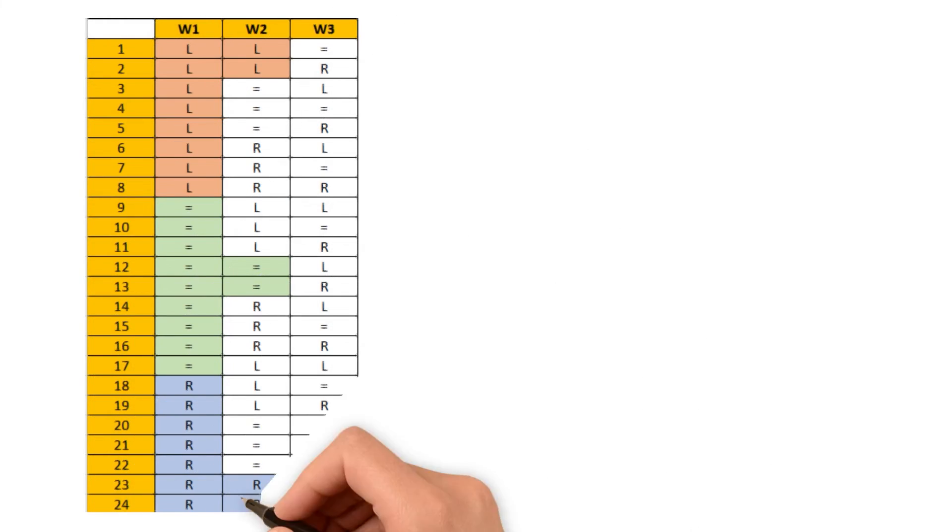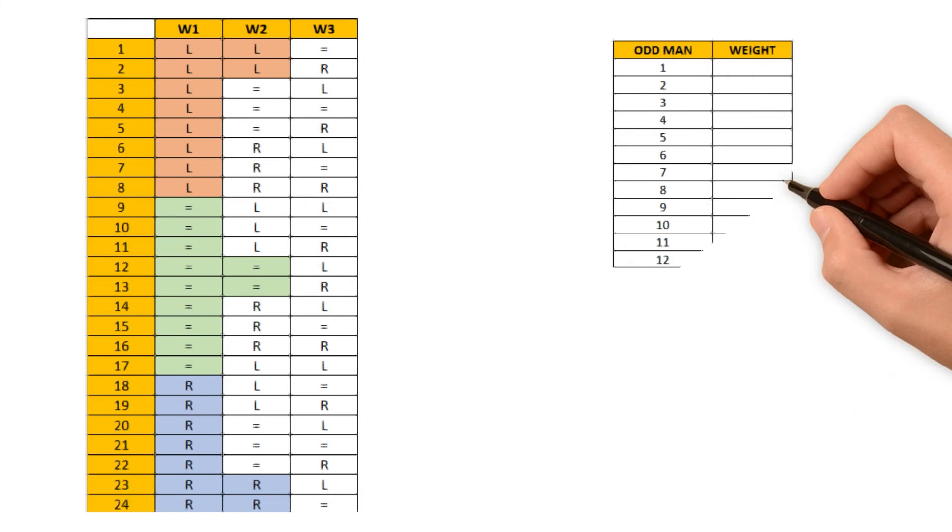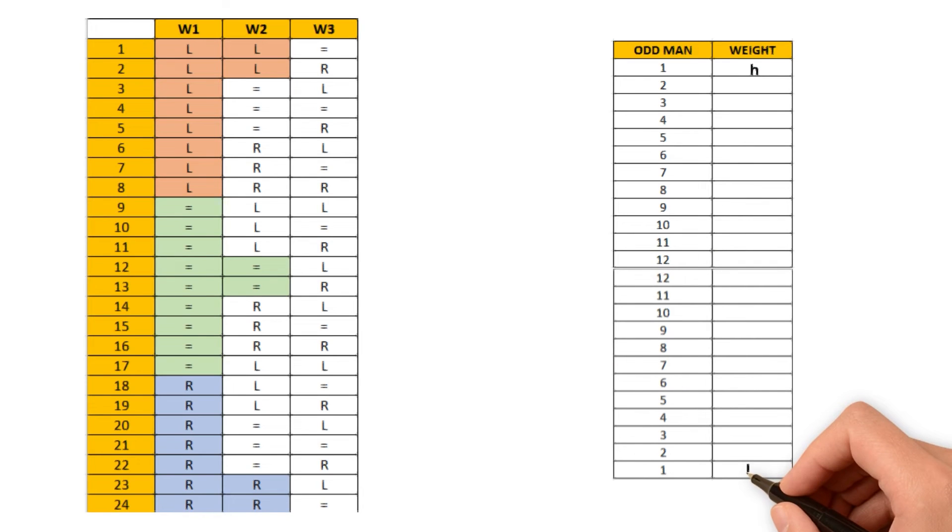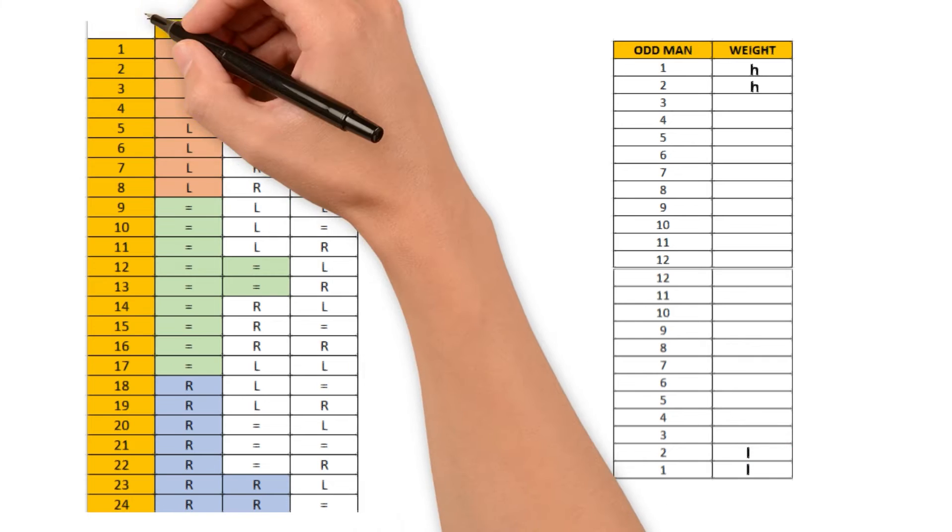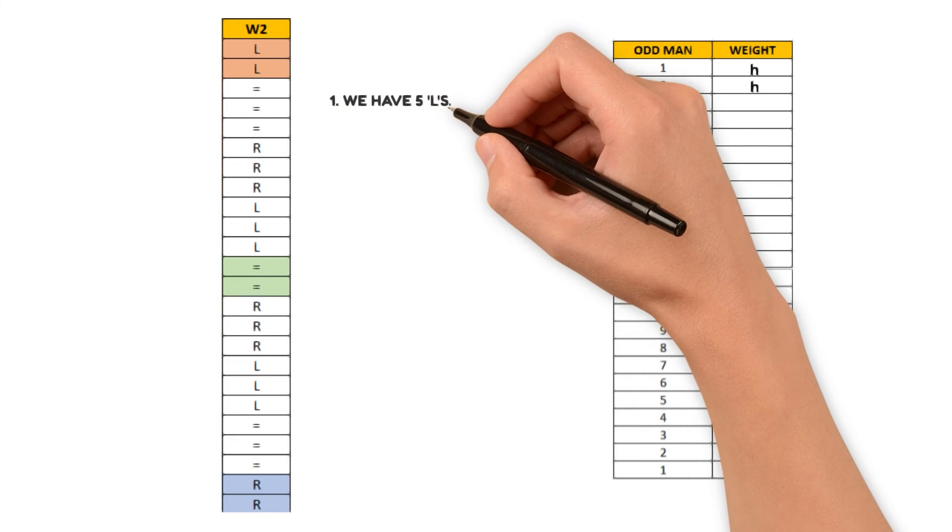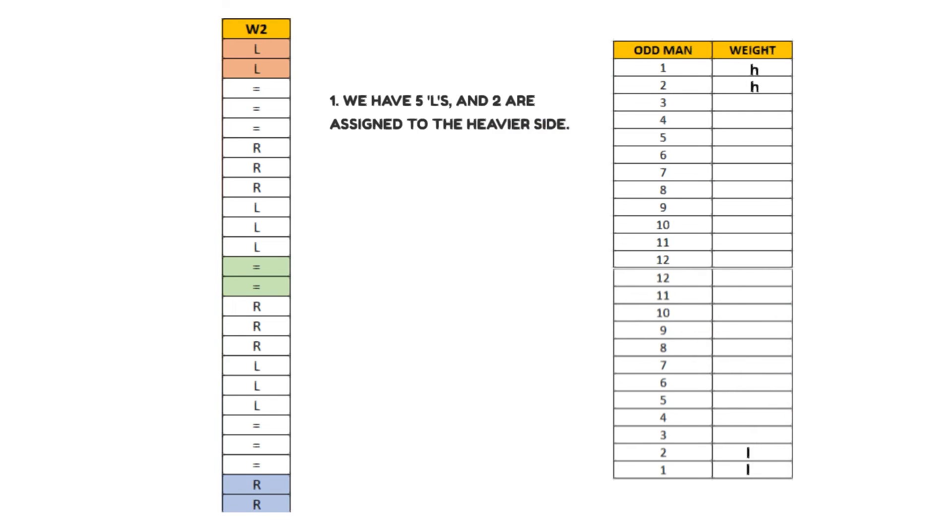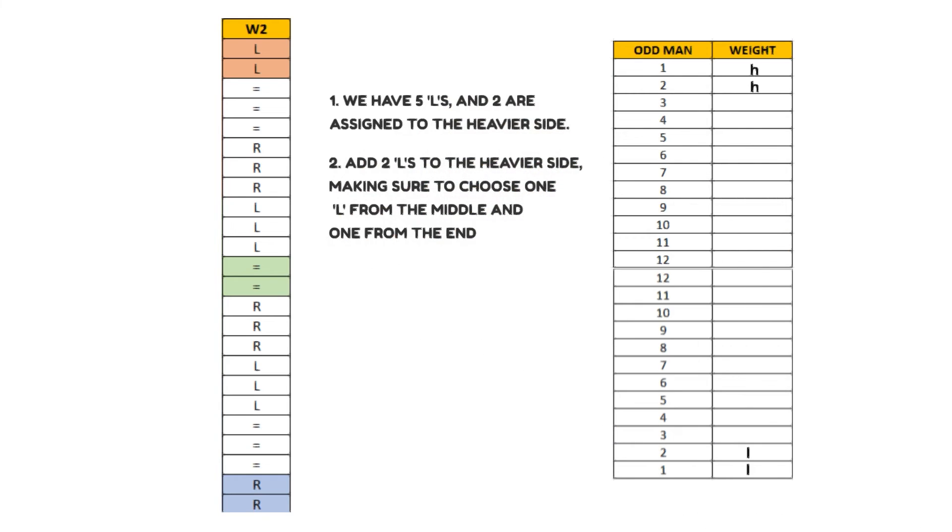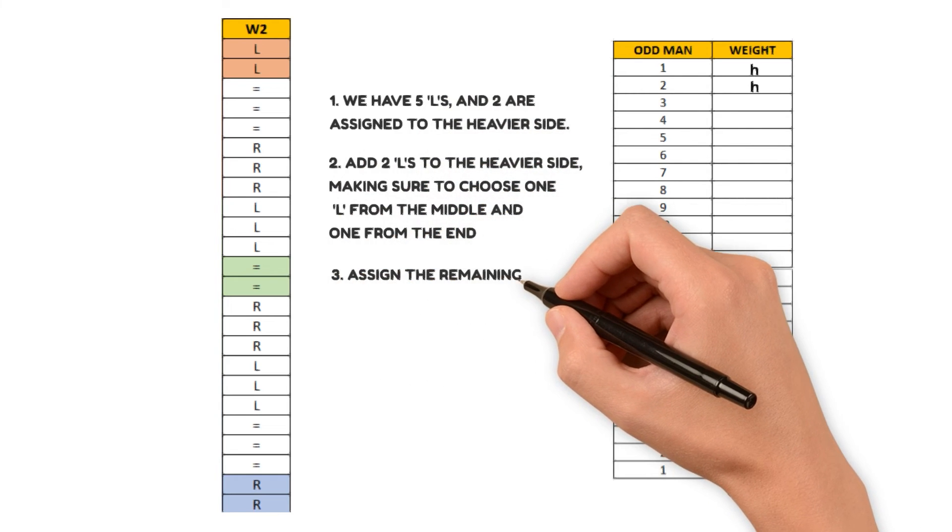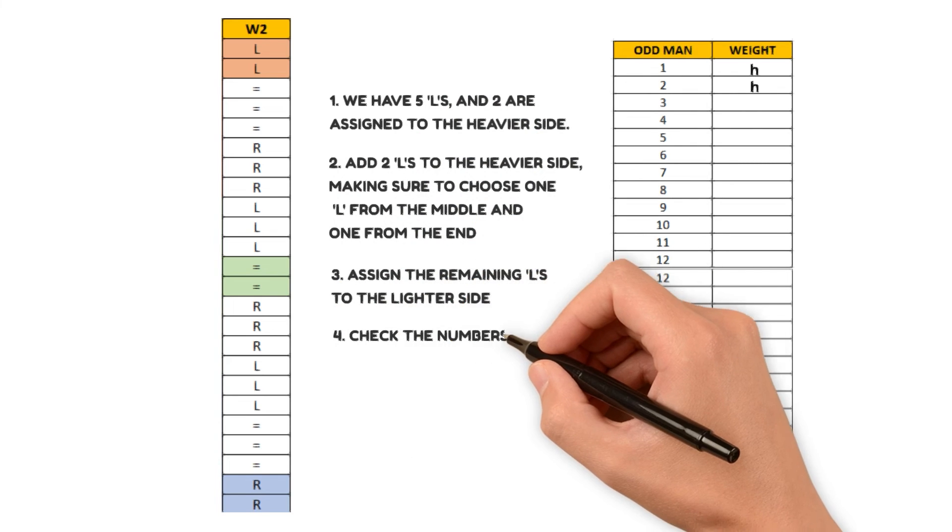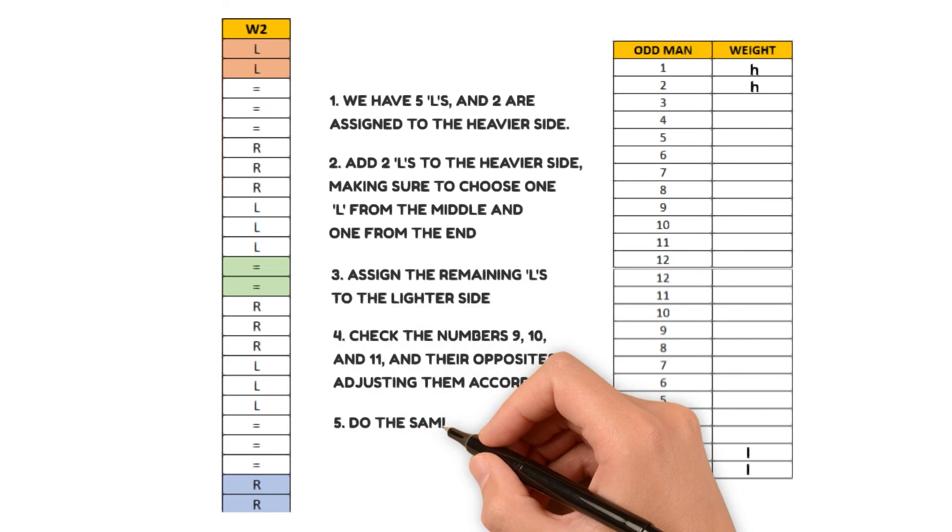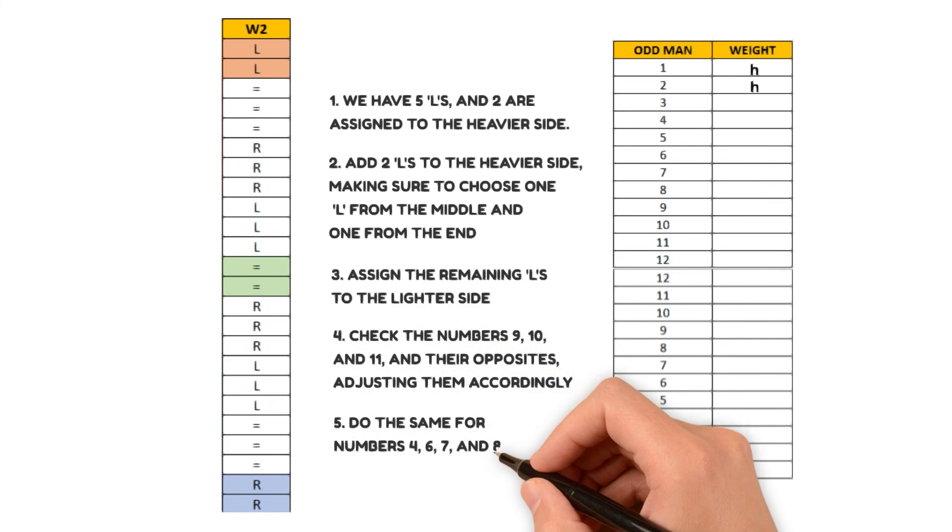Now, let's start by assigning numbers. We'll assign numbers from 1 to 12 and then assign the same numbers to their opposites. Make sure the L numbers on the heavier and lighter sides match. Then take care of the remaining Ls and Rs accordingly. Now, let's focus on the second column. We have 5 Ls and 2 are assigned to the heavier side. Add 2 Ls to the heavier side, making sure to choose 1 L from the middle and 1 from the end. Then assign the remaining Ls to the lighter side. Check the numbers 9, 10 and 11 and their opposites, adjusting them accordingly. Also, do the same for numbers 4, 6, 7 and 8.